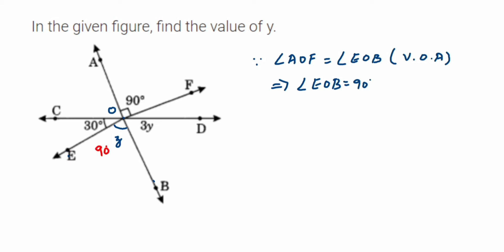But we have to find the value of y. How can we do this? Here, if you see, this is a straight line CD. On that we have three angles: COE, EOB, and BOD. They all are lying on a straight line.